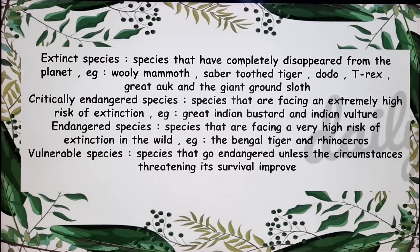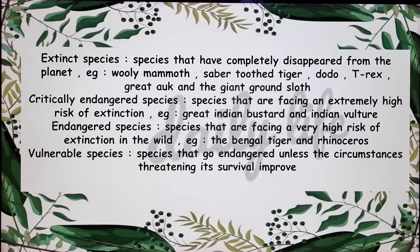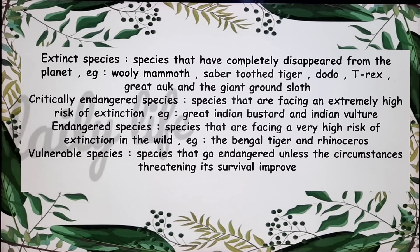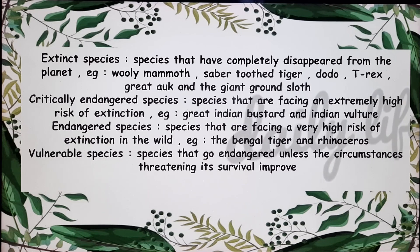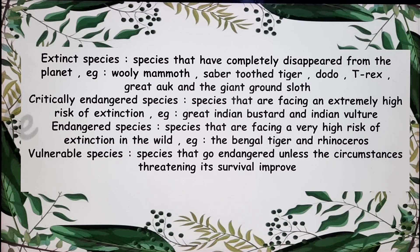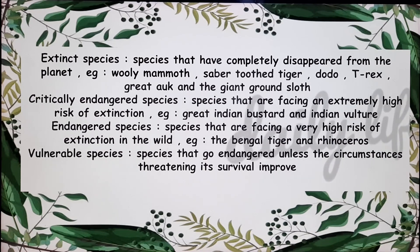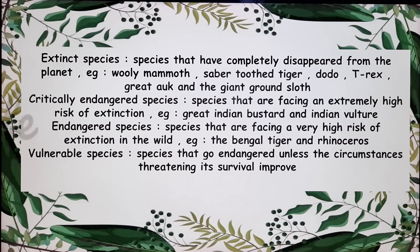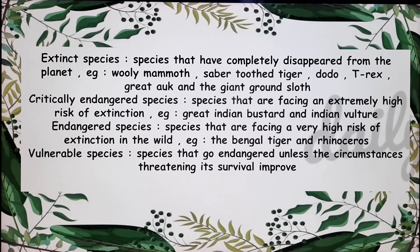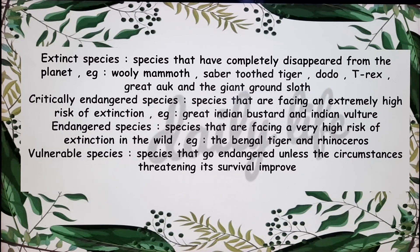Next comes endangered species — species that are facing a very high risk of extinction in the wild. Examples include the Bengal tiger and rhinoceros, though right now the Bengal tiger is classified as a vulnerable species. Vulnerable species are species that will go endangered unless the circumstances threatening their survival improve. They can survive if their habitat is maintained, but if it's not, they will become endangered.